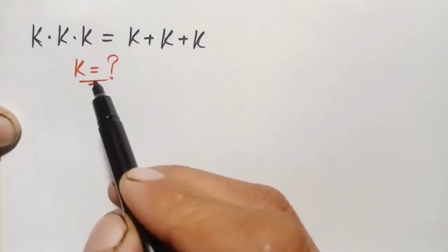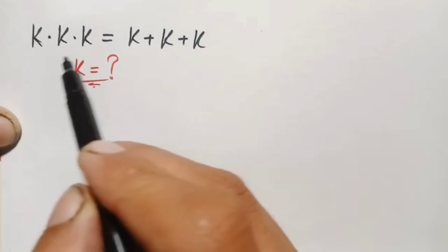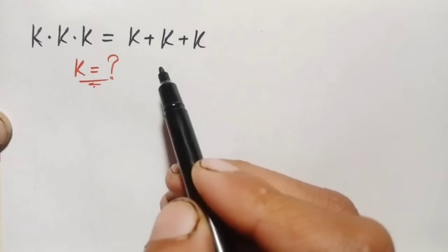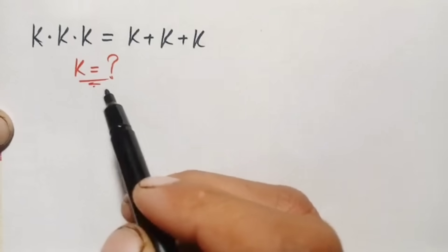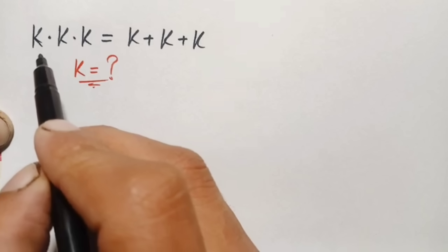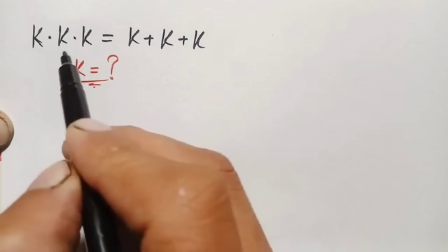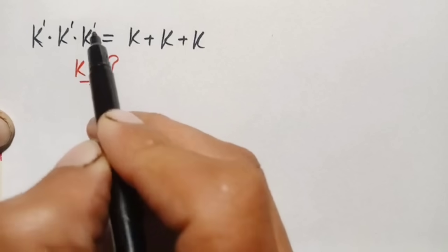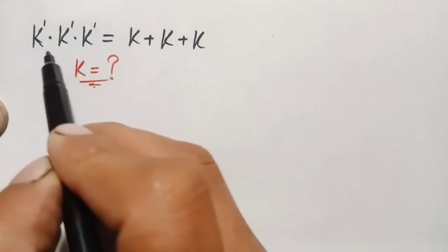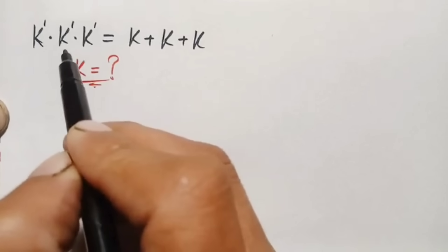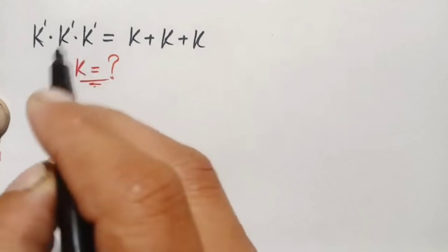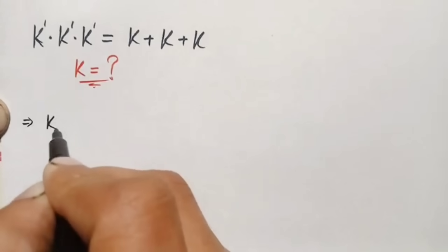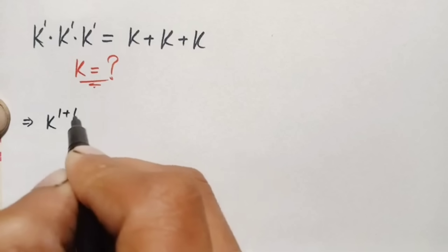Here k is multiplied three times on the left hand side, and k is added three times on the right hand side. Looking at the left hand side, all the variables have the same base with a power of one. We use the same-base exponential identity: when the base is the same, we write the base one time and add the powers.